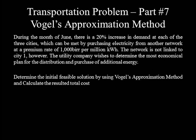During the month of June, there is a 20% increase in demand at each of the three cities, which can be met by purchase of electricity from another network at a premium rate of 1,000 per million kWh. The network is not linked to C2. The utility company wishes to determine the most economical plan for distribution and purchase of additional energy. The question is: determine the initial feasible solution using Vogel's approximation method and calculate the total cost.